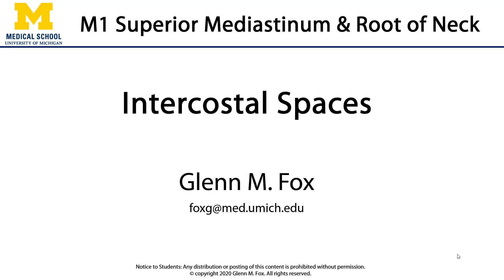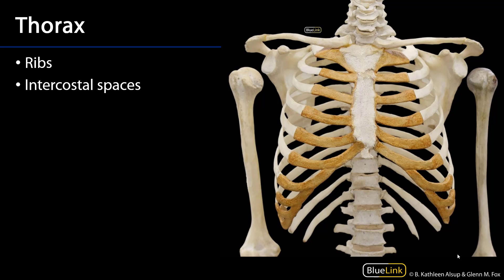Let's talk about intercostal spaces. The thorax is surrounded by a bony cage comprised of 12 thoracic vertebrae, their associated 12 pairs of ribs, and a sternum. These ribs are numbered 1 through 12 and the intercostal spaces are found between the ribs and the costal cartilages which connect the ribs to the sternum. Every intercostal space, of which there are 11, is named for the rib superior to it.